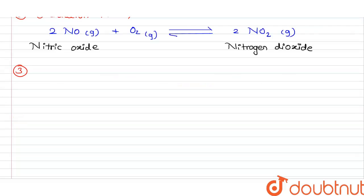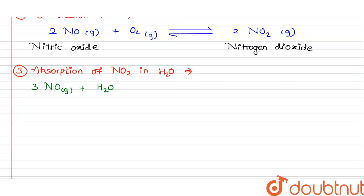The third and final step is the absorption of nitrogen dioxide in water. The reaction is: 3 NO2 (gas) plus H2O (liquid), and the products are 2 HNO3 in aqueous form plus nitric oxide (NO) in gaseous form.